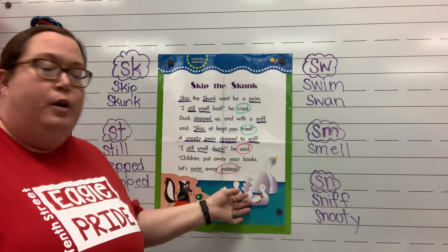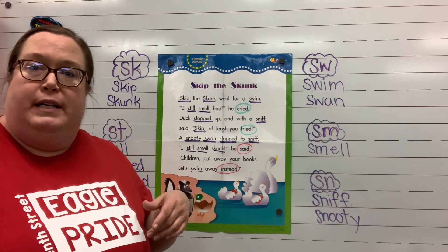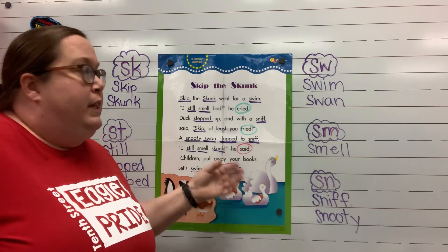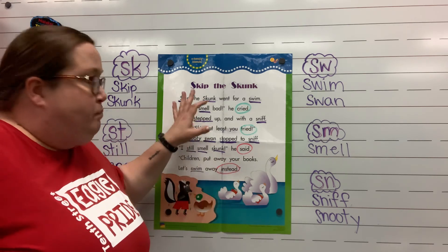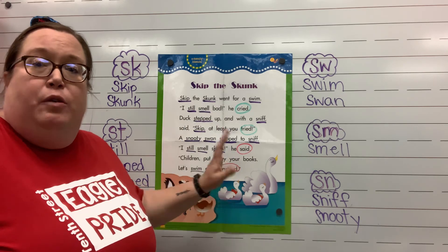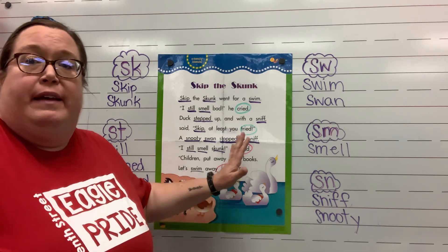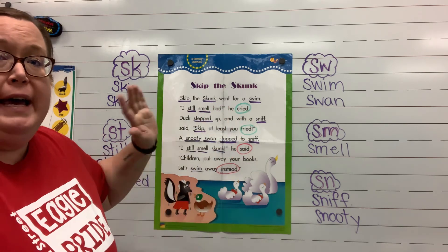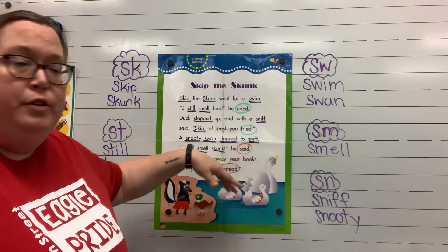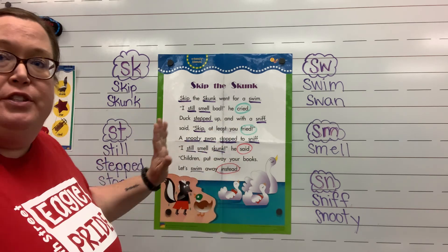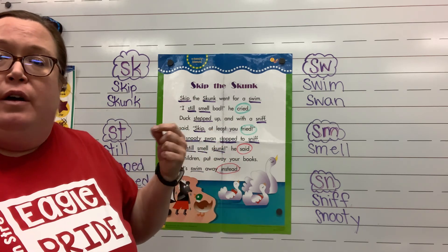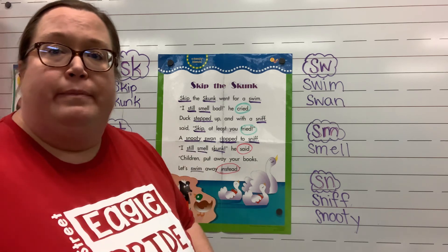For one of your Seesaw activities this week, you will be reading or listening to this poem, and then you will pick out the S-Family Blends. You won't need to do the rhyming or the list — you're just going to be highlighting or circling those S-Family Blends.